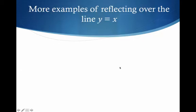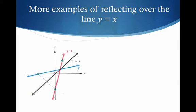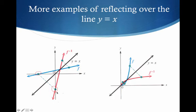Let's look at another example. Here is an arbitrary example where you can see the blue function f and the inverse function f inverse in red, showing how we're flipping over the black line y equals x. The x-intercept of f becomes the y-intercept for f inverse. Similarly, we're just seeing points flipped or reflected across this black line, y equals x.